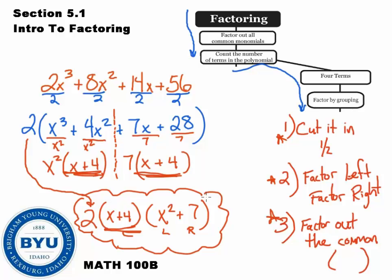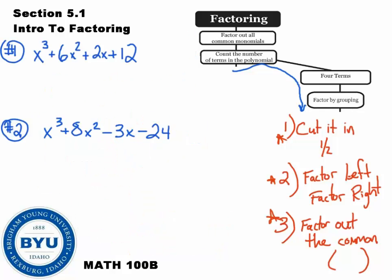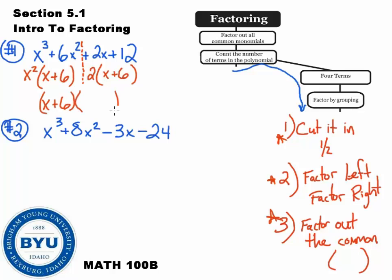It's your turn to try some factor-by-grouping problems. Here are two problems — go ahead and run through the steps and give it a try. For problem 1: no common stuff to pull out (can't pull out a 2 since the first term doesn't have one). Four terms, so factor by grouping — cut it in half. On the left, pull out x², leaving (x + 6). On the right, pull out 2, leaving (x + 6). Common parentheses: pull out (x + 6). Left-over terms are x² and 2, giving a final answer of (x + 6)(x² + 2).